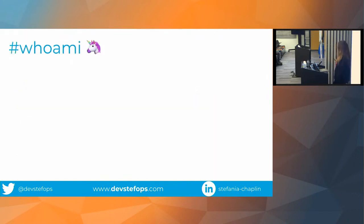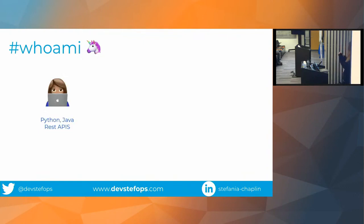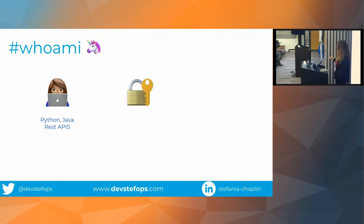So, who am I? A little bit about myself. I used to be a developer — Python, Java, REST APIs. So if someone presented me a JSON, I'm one of those people who can tell you exactly what Python command you need to get the exact key or value you want, because that's just how my brain works.